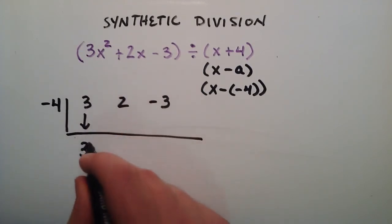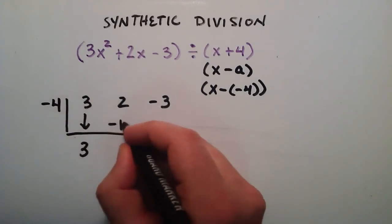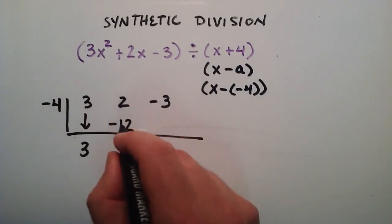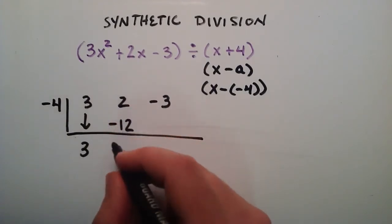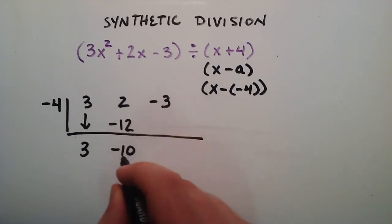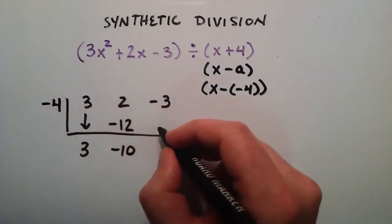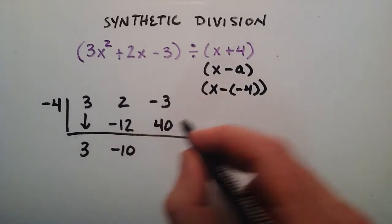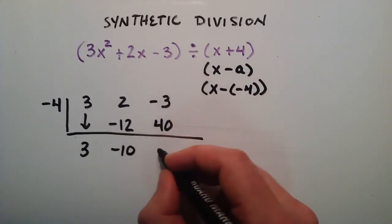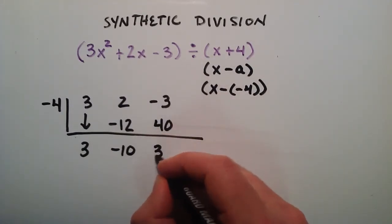Then we take 3 times a negative 4, which is negative 12. Add these two together. 2 plus a negative 12 is a negative 10. Negative 10 times a negative 4 is a positive 40. And 40 plus a negative 3 is a positive 37.